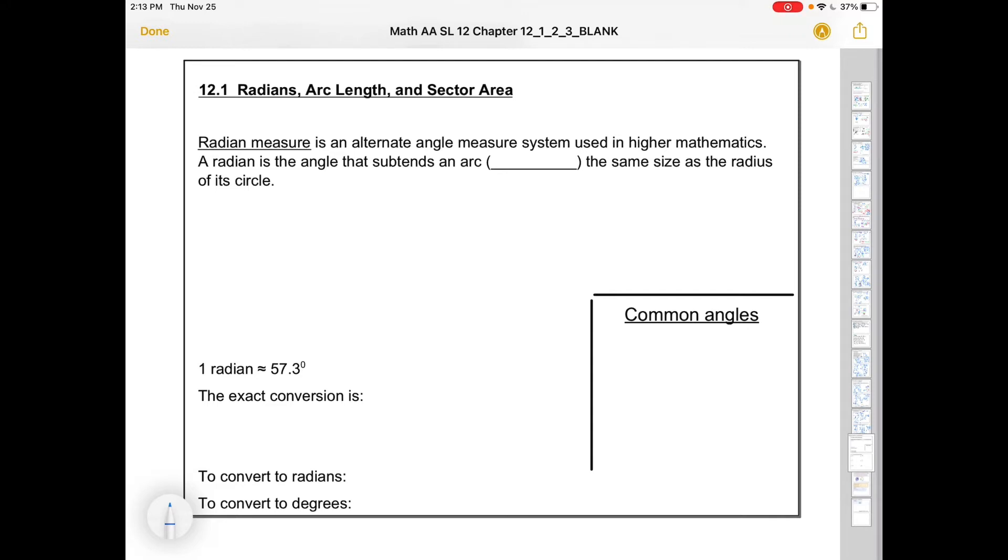Radian measure is an alternate angle measure system used in higher mathematics. A radian is an angle that subtends an arc, or a pie crust, essentially the same size as the radius of its circle. What it's doing is taking some angle and whatever angle gives you a pie crust length here that is the same as the radius of the circle.